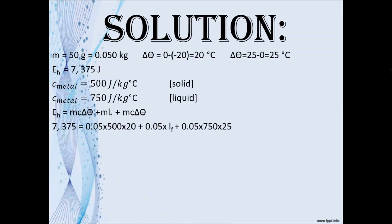So we substitute our values. We will have the total heat energy which is 7,275 is equal to 0.05 times 500 times 20 plus 0.05 times L plus 0.05 times 750 times 25. Simplifying we will have 7,275 is equal to 500 plus 0.05 times L plus 625.